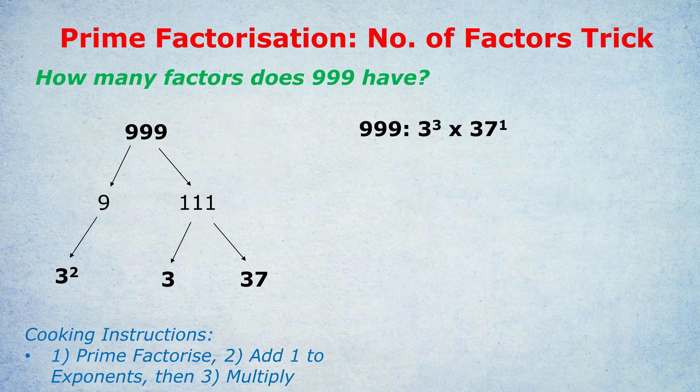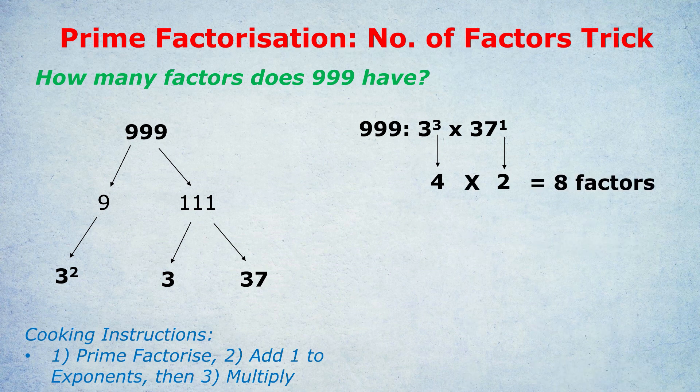The trick is as follows: we add 1 to each of the exponents. So that 3 becomes a 4, the 1 becomes a 2, and then you simply multiply those results. 4 times 2 equals 8. So 999 has 8 factors.